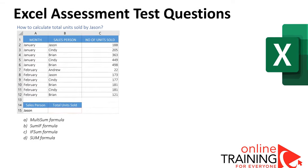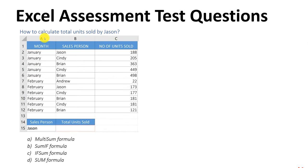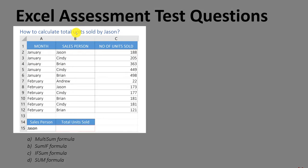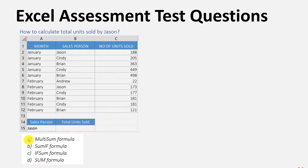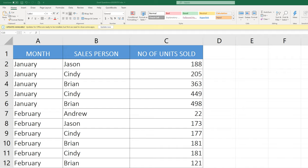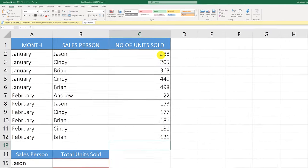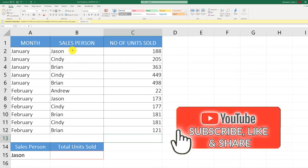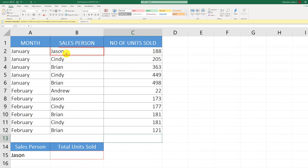Very frequently, you might be asked how to solve a specific problem during an Excel assessment test. For example, in this question you're asked how to calculate total units sold by Jason. You're presented with a table showing months, salesperson, and number of units sold. One of the salespeople is Jason, but there are others too. The presented choices are multi-sum, SUMIF function, IF-SUM function, or SUM formula. Typically in Excel, when there are no conditions you use the SUM function, but here we have one condition — calculate units sold for Jason.